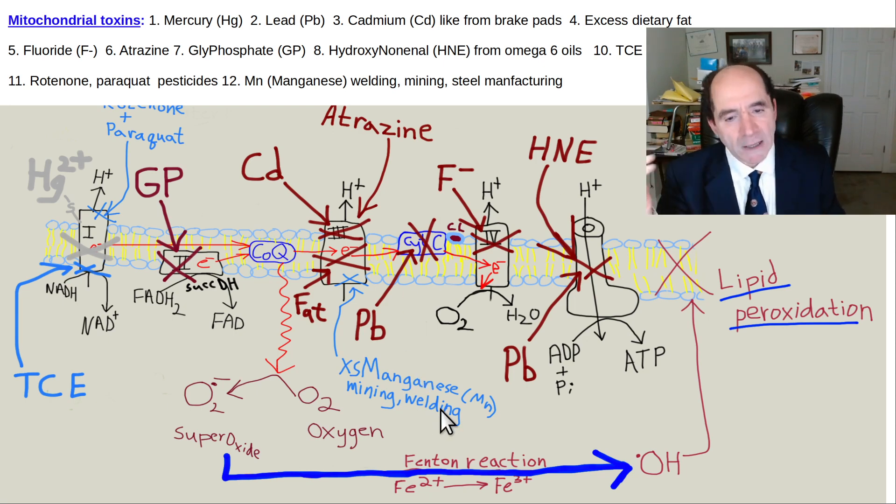Manganese from welding, working in mines, steel manufacturing. Some of these things are associated with cleaning chemicals. GP, this is what's sprayed on the non-organic soy, very commonly. Lead, another metal toxin. HG, another metal toxin. These are some pesticides over here. You really want to avoid this stuff as best you can.